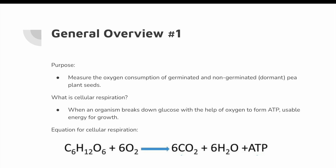What is cellular respiration? Cellular respiration is when an organism breaks down glucose with the help of oxygen to form ATP. ATP is usable energy for growth and cellular processes within the plant. Here is the equation for cellular respiration, where one molecule of glucose reacts with six molecules of O2 to form six molecules of CO2, six molecules of H2O, and ATP.